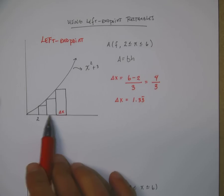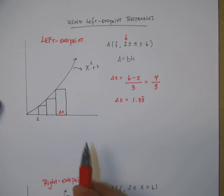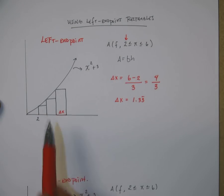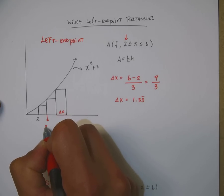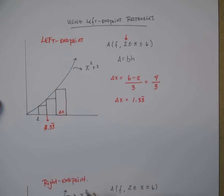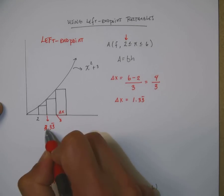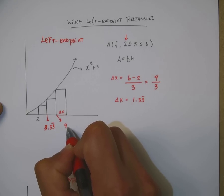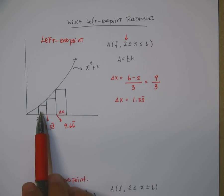So each additional x value is going to be added by 1.3. So here we start at 2 because we're starting on the left end point. And then to get to this point right here we're going to add 1.3 so we could say this is 3.33. And then the next rectangle is going to be this point right here. We're going to add another 1.33 so that's going to be 4.66. And that's going to give me my 3 rectangles. So that will be 1, 2 and 3.